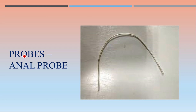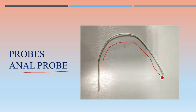This is an anal probe — one of the miscellaneous instruments. It is a long cylindrical-like structure, slender, and is basically used for calibrating anal fistulas and peri-anal fistulas. It is very flexible and can be molded in any direction as needed.